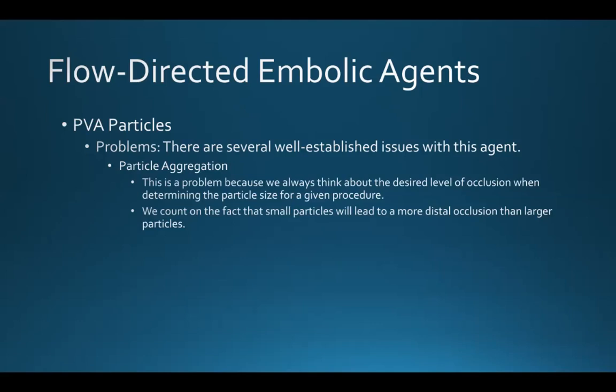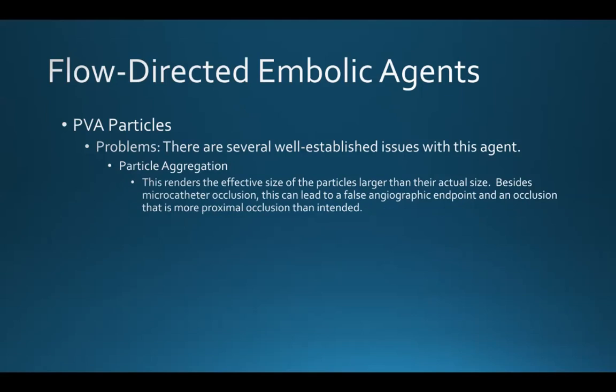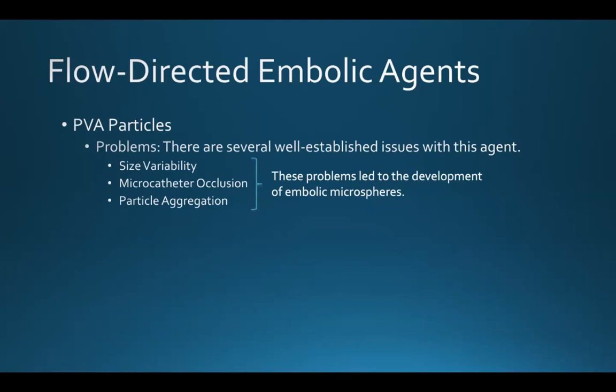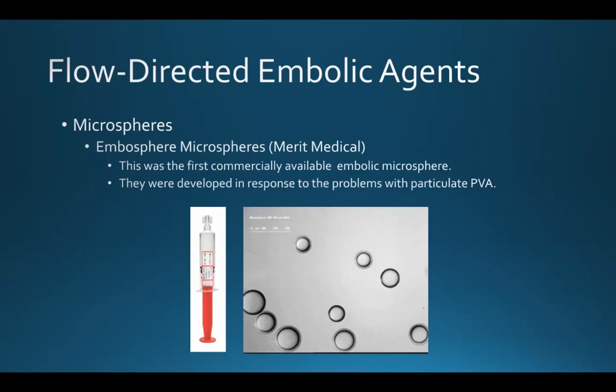This is a problem because we always think about the desired level of occlusion when determining the particle size for a given procedure. We count on the fact that small particles will lead to a more distal occlusion than larger particles. If the particles aggregate, this renders the effective size of the particles larger than their actual size. Besides causing microcatheter occlusion, this can lead to a false angiographic endpoint and an occlusion that is more proximal than intended. It is these problems — size variability, microcatheter occlusion, and particle aggregation — which led to the development of embolic microspheres.